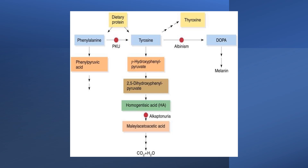Tyrosine can also give melanin. Deficiency in the enzyme that converts tyrosine into melanin — called tyrosinase enzyme — would result in what is called albinism: a white-colored baby whose hair and skin are white due to deficiency of melanin. We have already described the phenylketonuria and alkaptonuria cases.